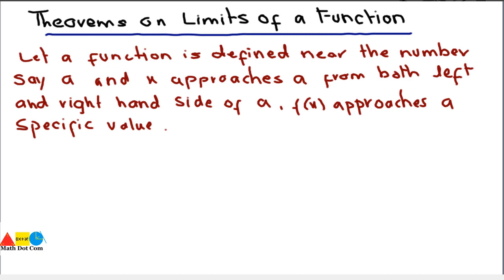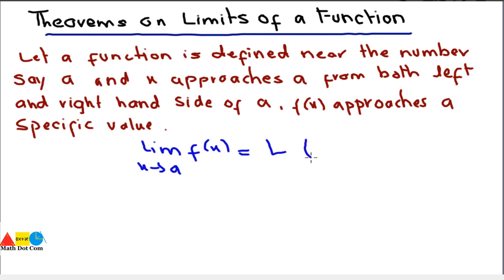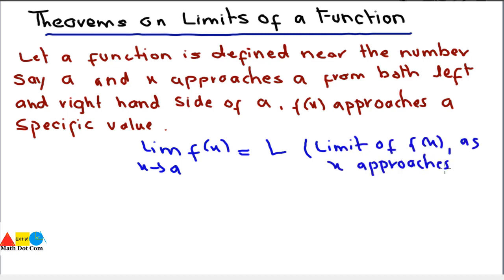For example, the function is defined at x approaches to a. To understand this concept, let's have the mathematical form: the limit as x approaches a of f(x) equals a specific value l. We can read this mathematical statement as 'the limit of f(x) as x approaches a is l.' This is the mathematical representation of that statement.